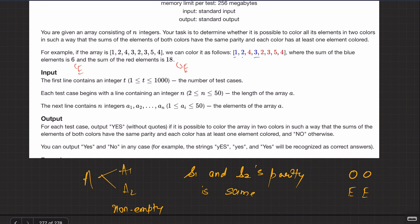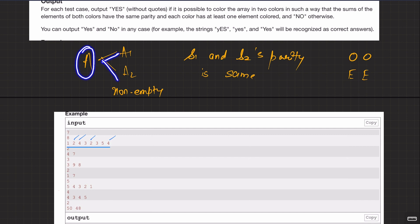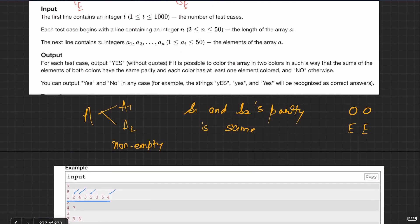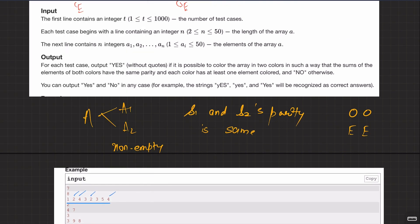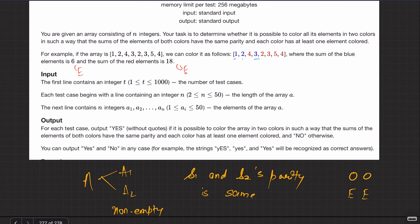So that's the question. Input is simple — just take the array. Print 'yes' if it is possible to color the array in two colors such that the sums have the same parity, or print 'no'. To summarize: we are given array A, we want to divide it into two non-empty partitions, and S1 and S2's parity should be the same, where S1 and S2 are the sums of the two partitions. This is a question about parity — even or odd.